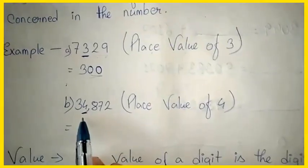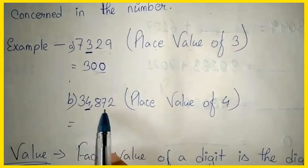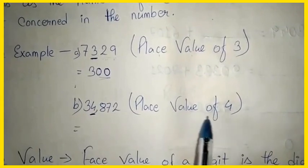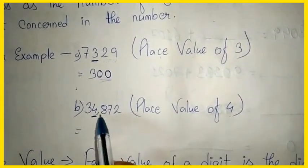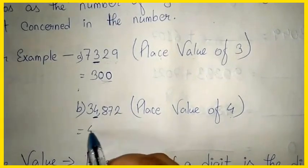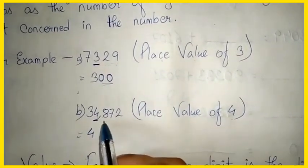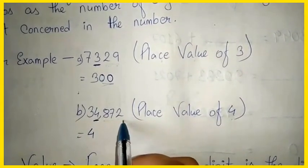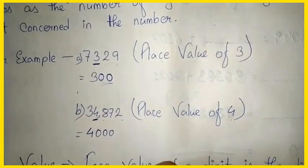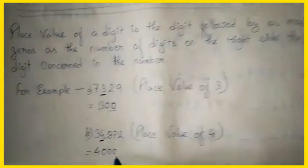Now let us take the five-digit number 34872 and find the place value of 4. We write down 4, then count the digits after it — there are three digits. So we add three zeros, giving us 4000. The place value of 4 in 34872 is four thousand.